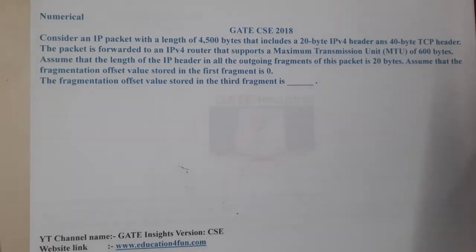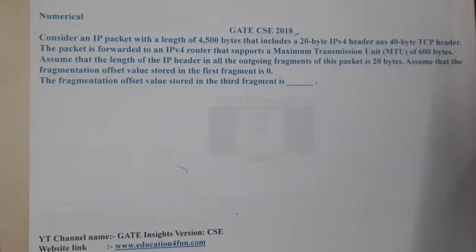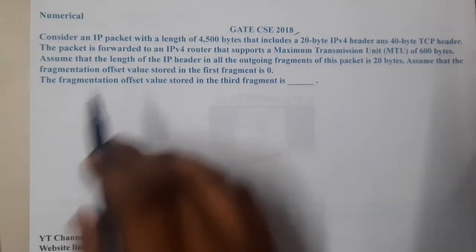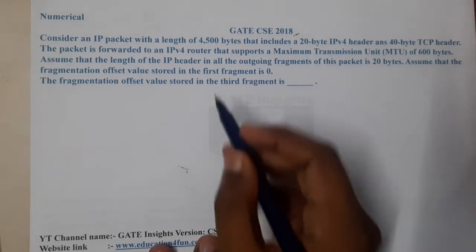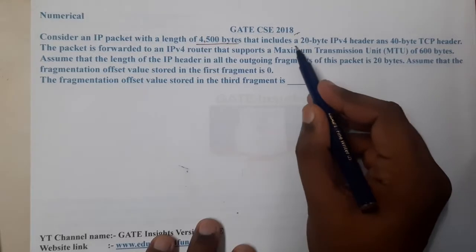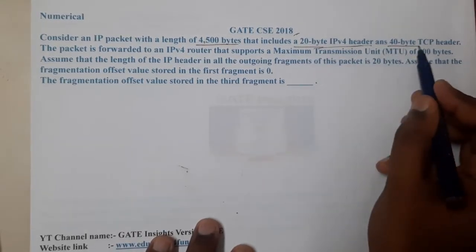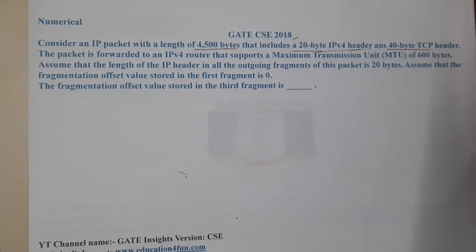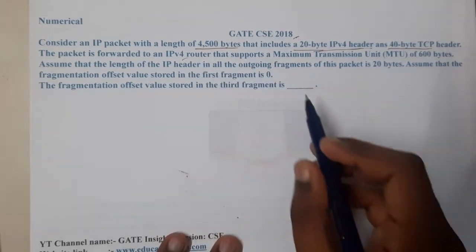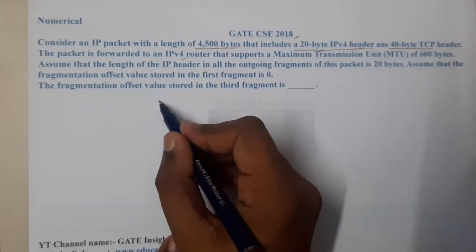Hello guys, we are back to the next lecture. This question belongs to GATE CSC 2018. Consider an IP packet with a total length of 4500 bytes — that includes a 20-byte IPv4 header and a 40-byte TCP header. The packet is forwarded to an IPv4 router that supports a maximum MTU of 600.